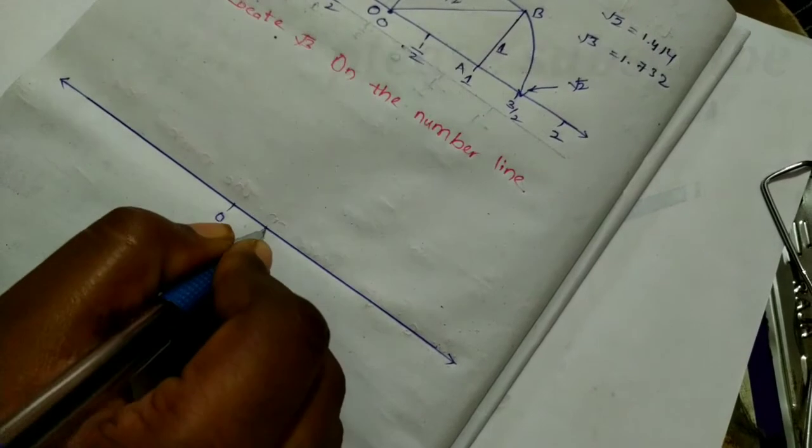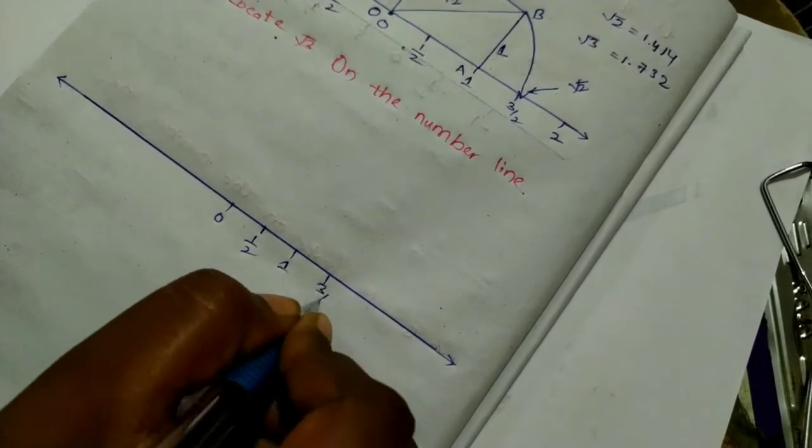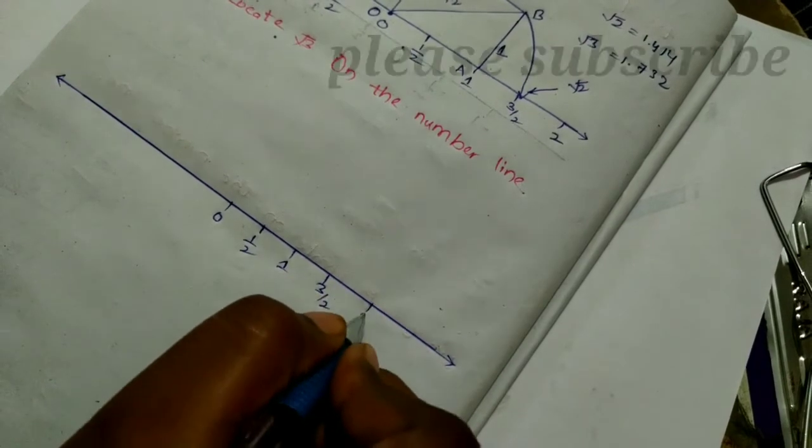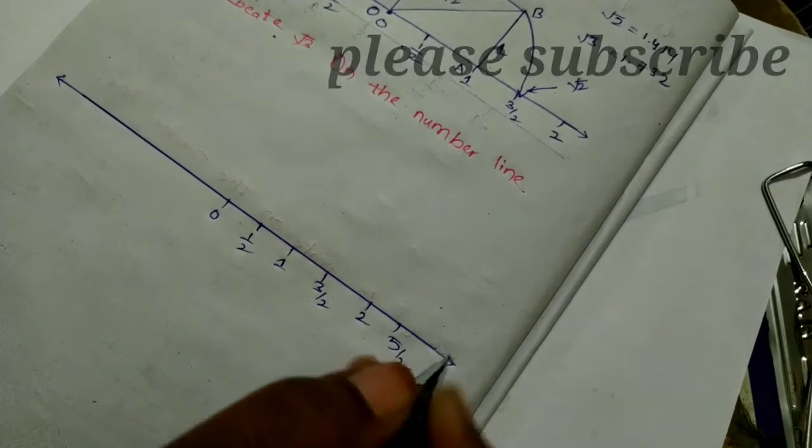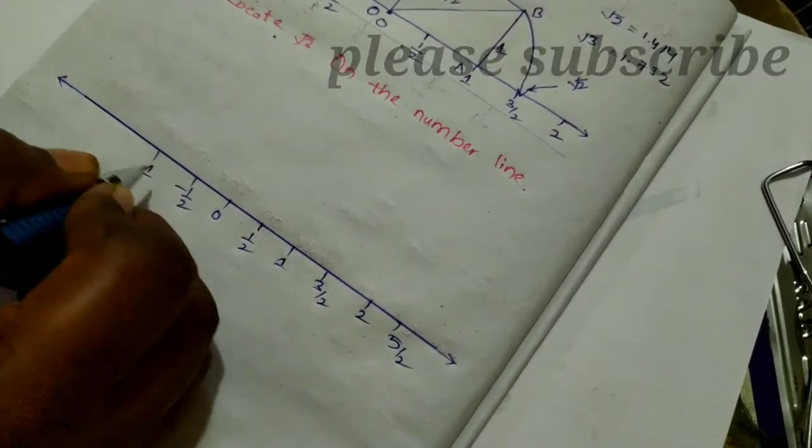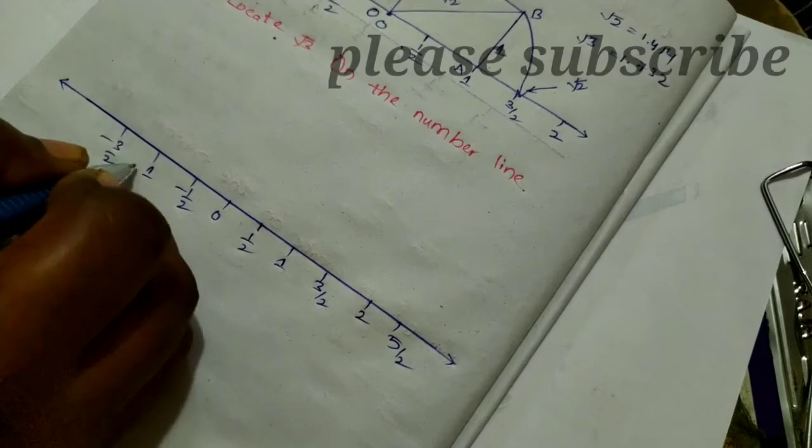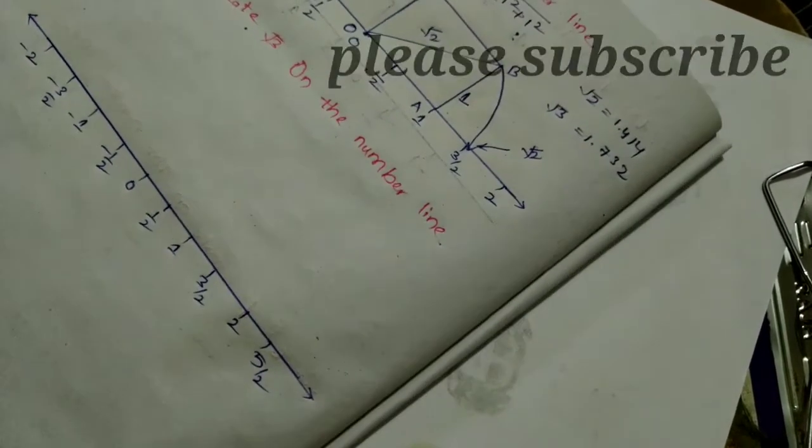Here is 0, 1 by 2, 1, 3 by 2, 2, 5 by 2. Here is the plus number. On the minus side: minus 1 by 2, 1, minus 3 by 2, minus 2.